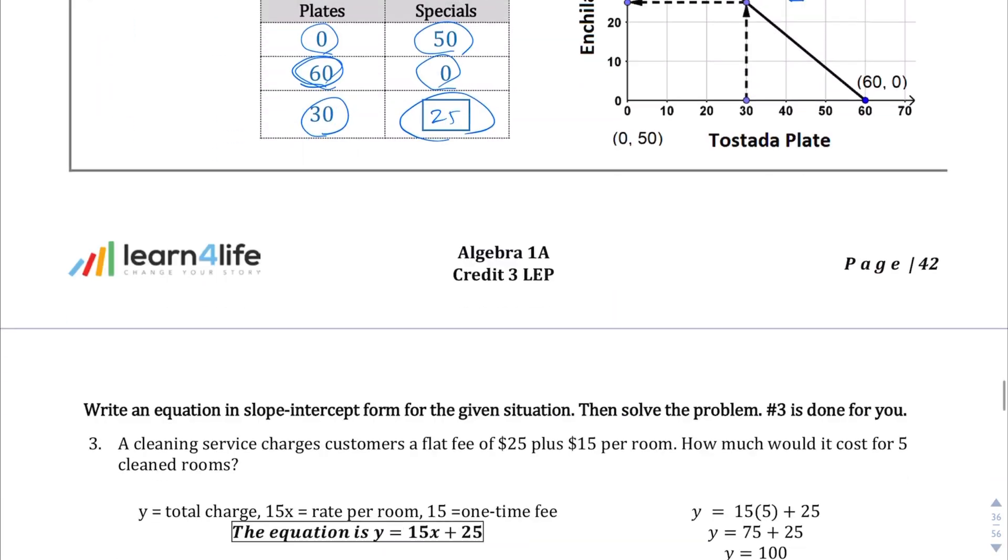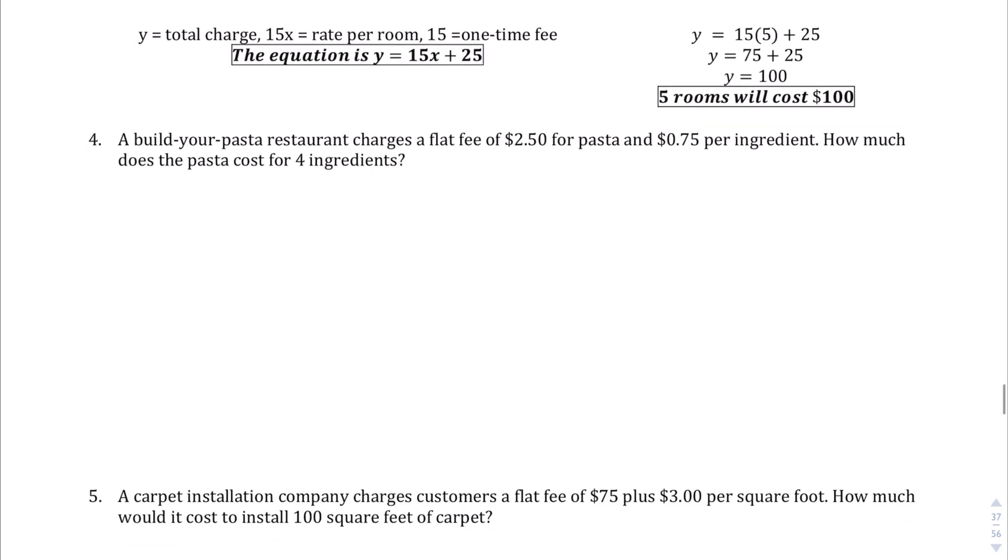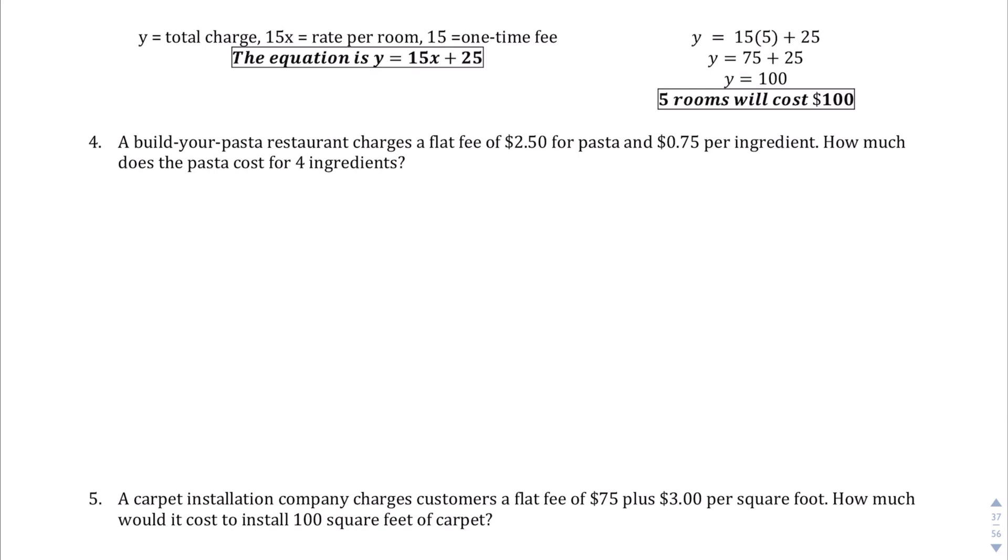So let's move on to some practice problems. Question three is done for you. You can kind of do that on your own if you want. Let's jump into question number four. A build your own pasta restaurant charges a flat fee of $2.50 for pasta at $0.75 per ingredient. So if we write an equation for this, here's the logic behind it.